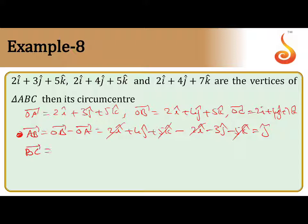Now you can take BC. BC is nothing but OC minus OB. What is OC here? 2i plus 4j plus 7k minus 2i minus 4j minus 5k. Here 2i cancel and 4j cancel.